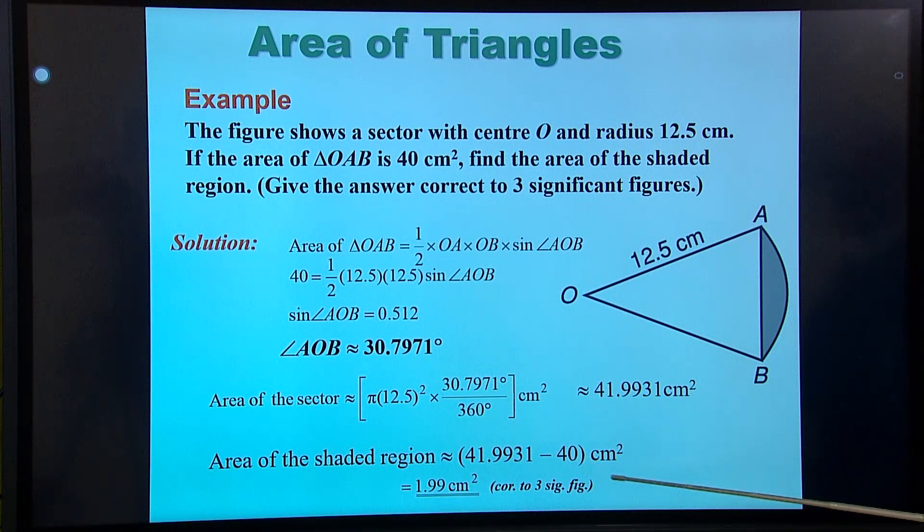Now, three significant figures, 1.99. That means two decimal places, but three significant figures.